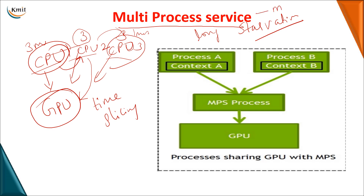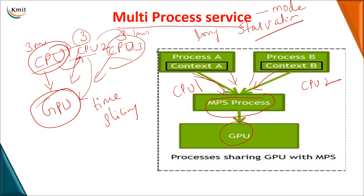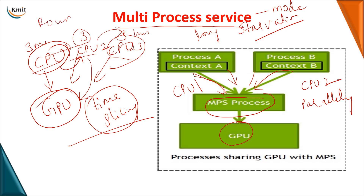The GPU can be made to work in MPS mode. MPS stands for Multiprocess Service, where the GPU can take operations from multiple CPUs and perform them simultaneously. For example, it can take operations from CPU 1 and CPU 2 and execute them in parallel. In the previous time slicing approach, the GPU allocated time to each CPU in a round-robin fashion. In MPS mode, irrespective of the number of CPUs, the GPU executes all operations from each CPU in parallel.